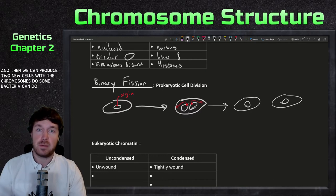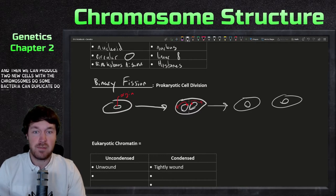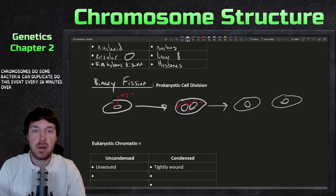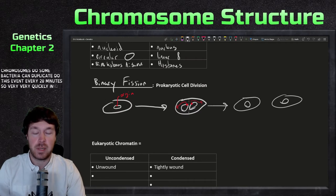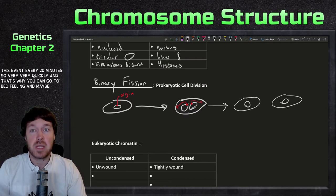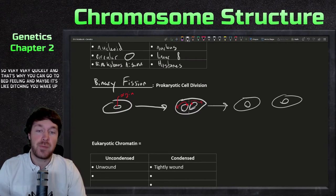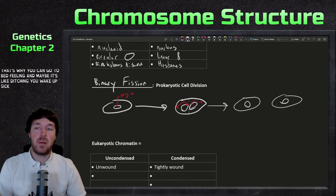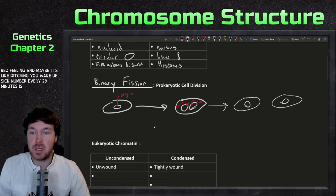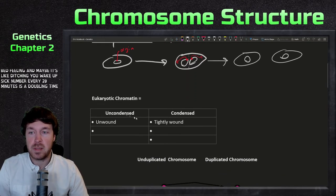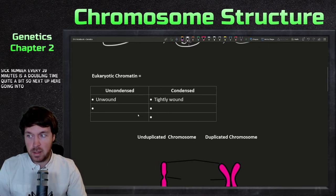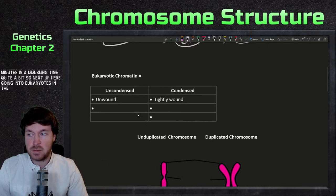Some bacteria can duplicate through this event every 20 minutes — very, very quickly. That's why you can go to bed feeling just a slight itch and wake up sick. Every 20 minutes is a doubling time, quite significant. So next, going into eukaryotes and the focus of eukaryotic chromatin.